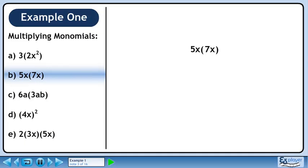In part b, we will multiply 5x and 7x. Multiply the coefficients 5 and 7 to get 35. Next, multiply x and x to get x squared. Our answer is 35x squared.